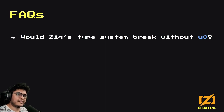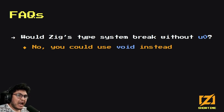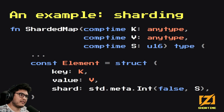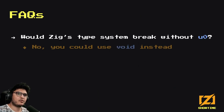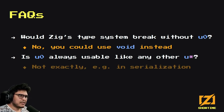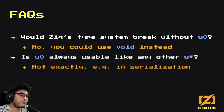Let's answer some quick questions. Would the type system break without u0? I think not — you could use void instead. If u0 were forbidden, you could put void there and add an if expression: if S is zero, the field becomes void instead of a u-something. You can do that and it still works. On the other hand, is u0 so nice that you can always use it like any other u-something and never think about it? Not exactly. It makes some things easier but doesn't automatically solve everything. Think about serialization.